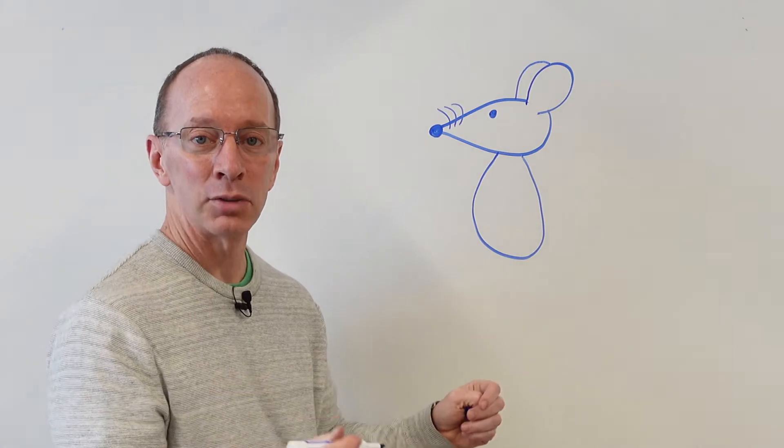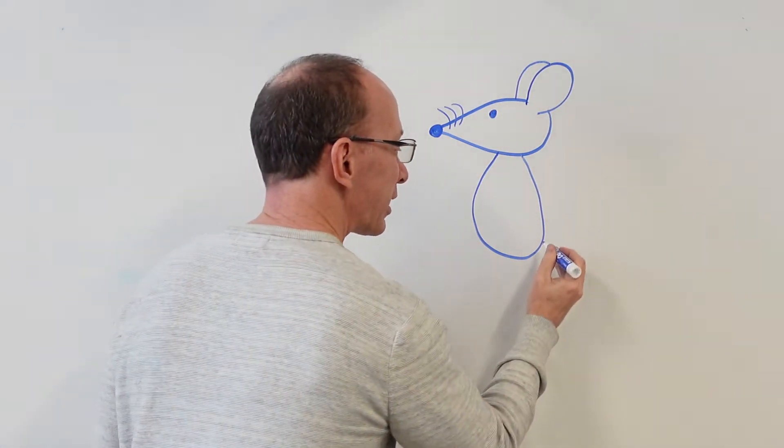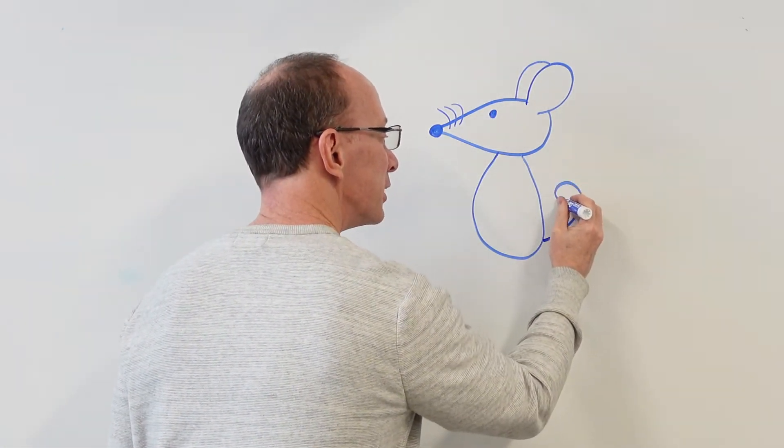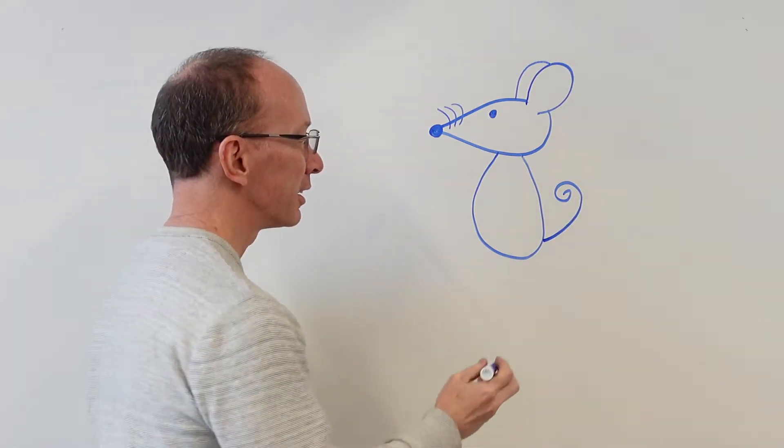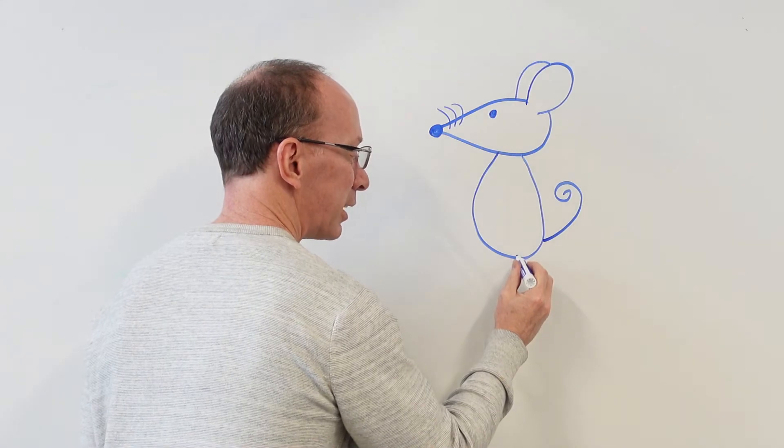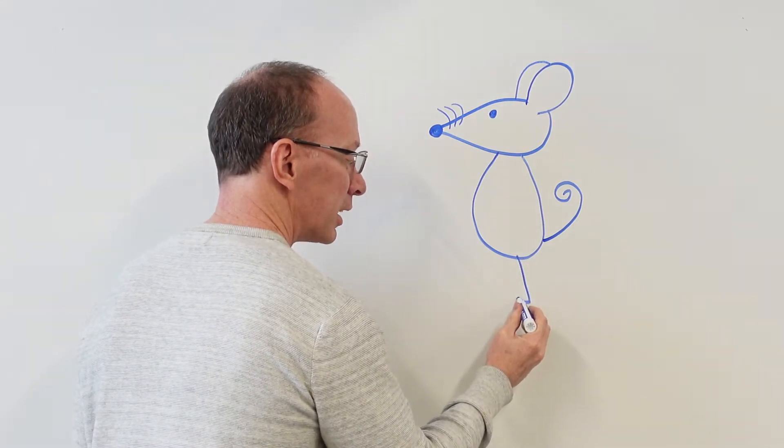And then mice will have that curly tail on the back of them. Do a nice little curly tail. And then we have to add our legs. And for the legs, it's just a cartoon leg.